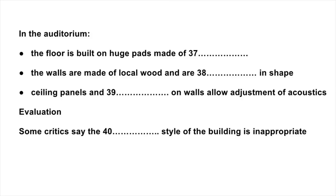The auditorium itself seats 1,500 people, the floors supported by 10 massive pads. These are constructed from rubber, and so are able to absorb any vibrations from outside and prevent them from affecting the auditorium. The walls are made of several layers of honey-coloured wood, all sourced from local beech trees. In order to improve the acoustic properties of the auditorium and to amplify the sound, they are not straight — they are curved. The acoustics are also adjustable according to the size of orchestra and the type of music being played.